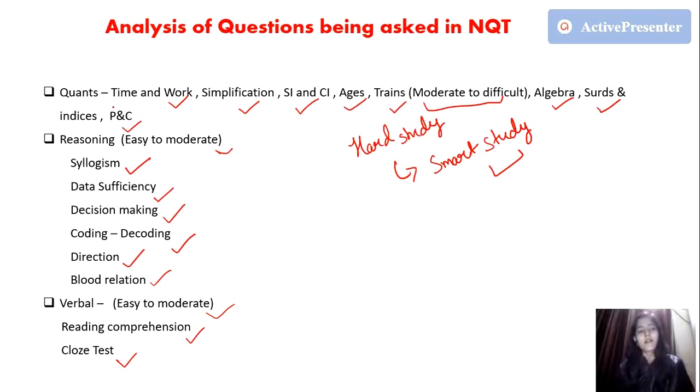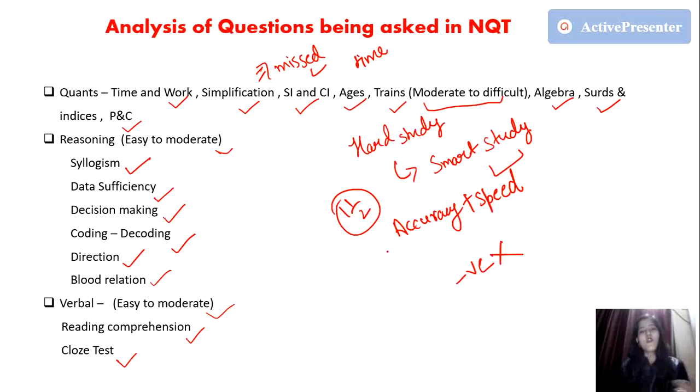Many students told that they missed in Quant part because of time. Always remember that along with accuracy, speed also matters. You have to take care of both. Don't give more than one and a half minutes or just two minutes to any question. If you are not able to solve it, just mark any answer randomly because there is no negative marking. Don't waste your time in any particular question.